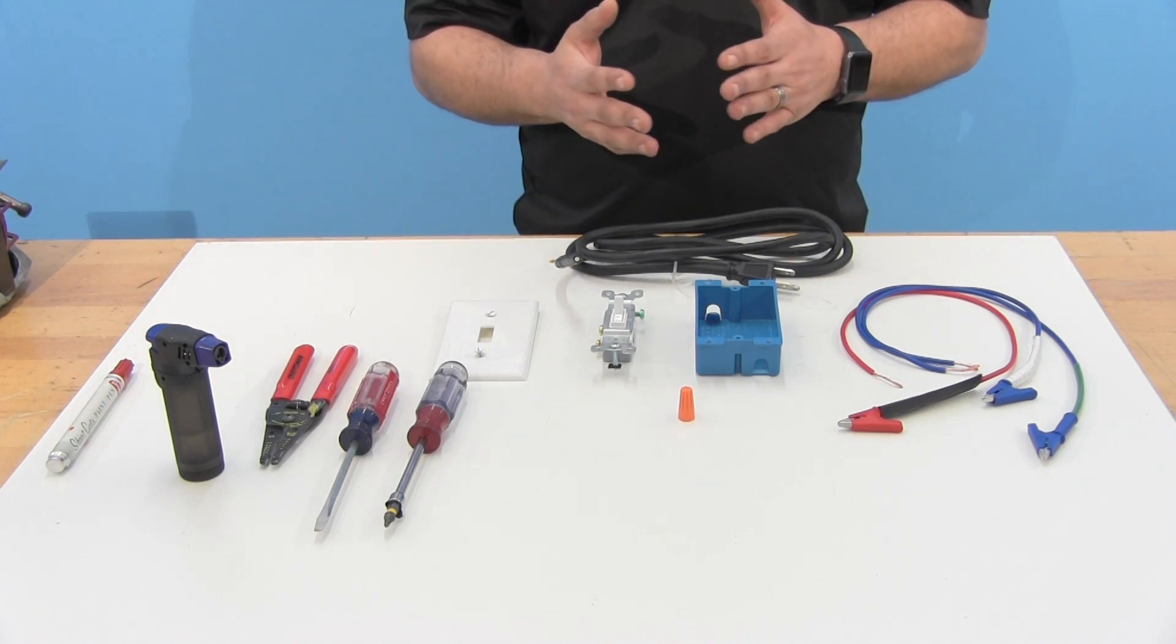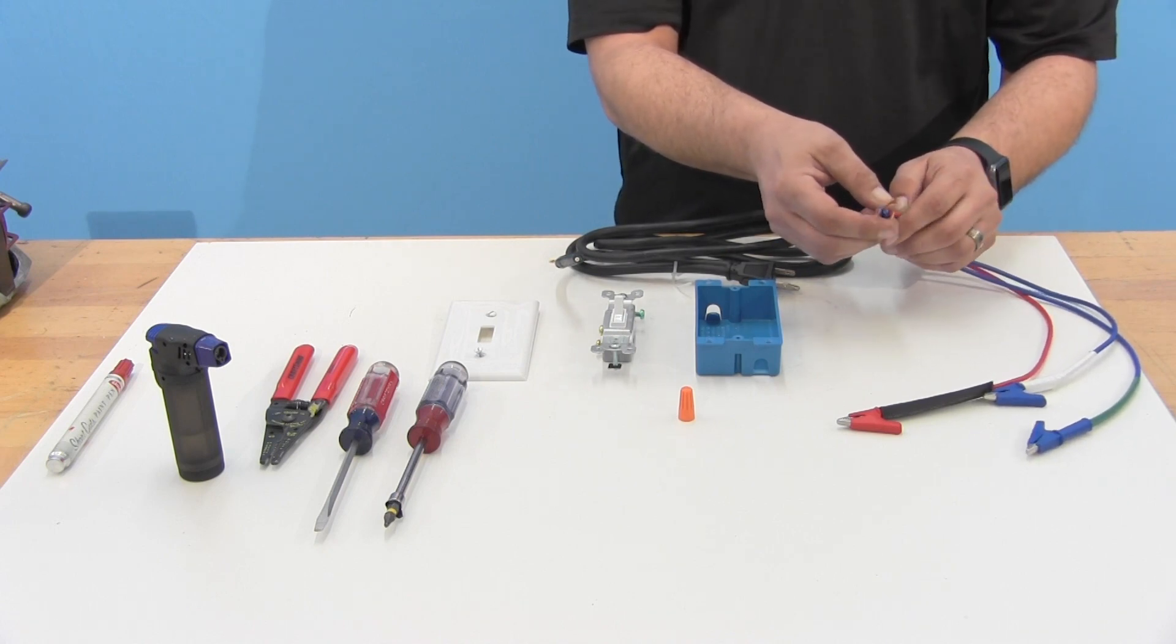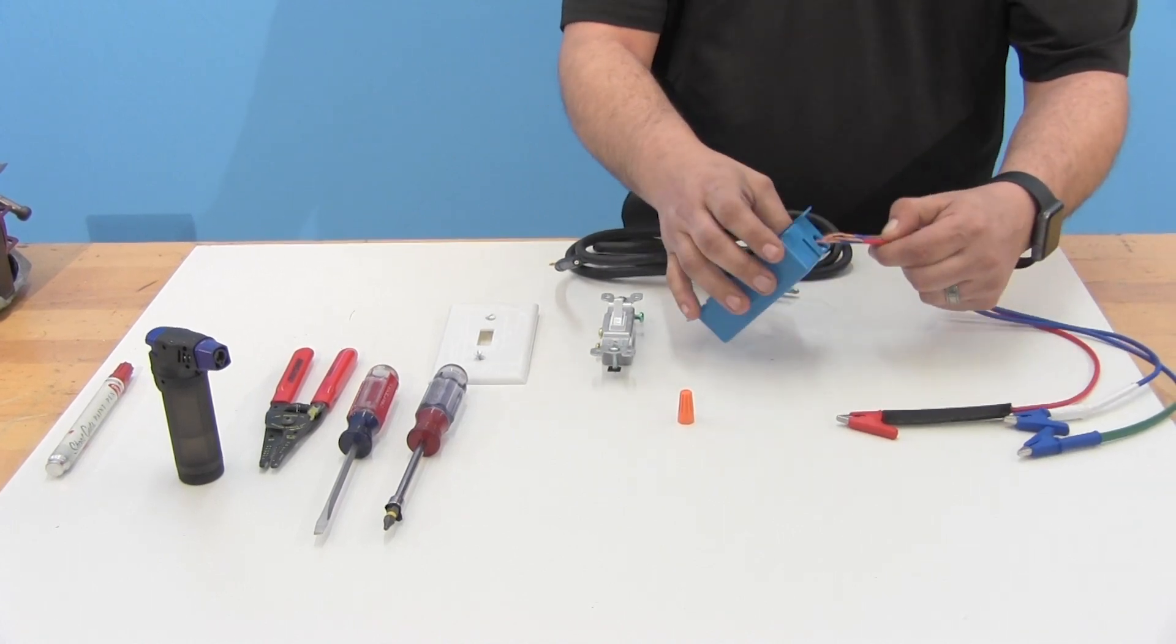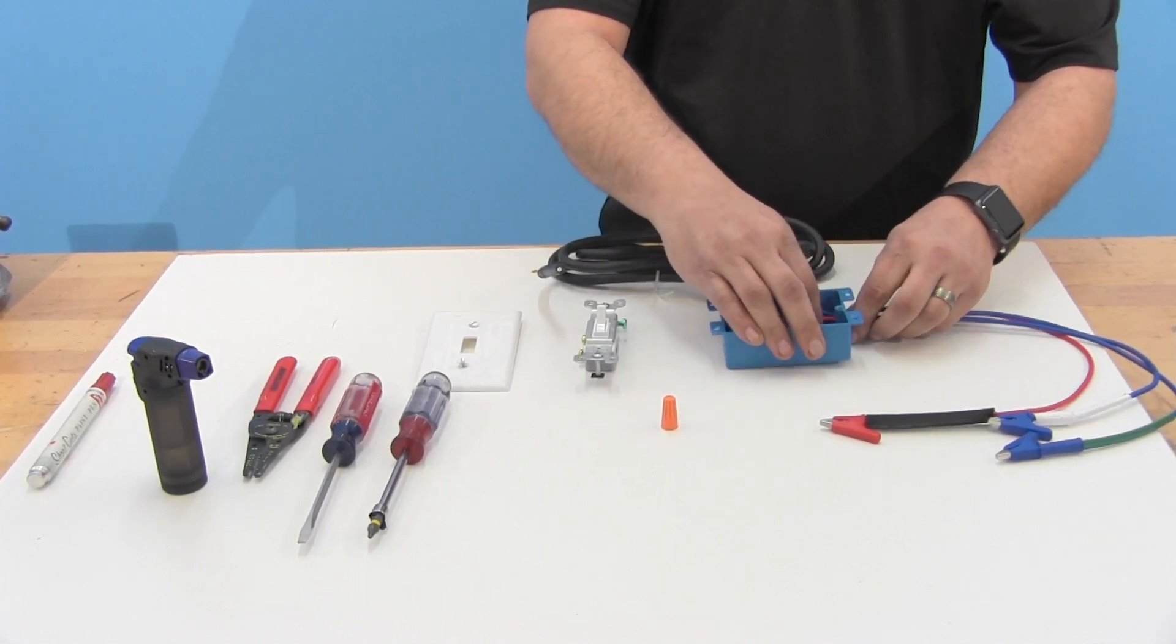So let's go ahead and assemble this and we're going to start by placing the wiring for the alligator leads inside the box. So choose either end, it doesn't matter, and just push those wires right through.